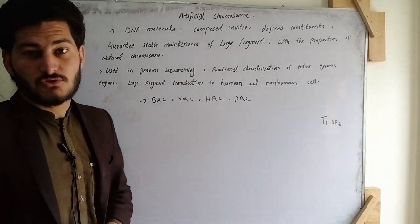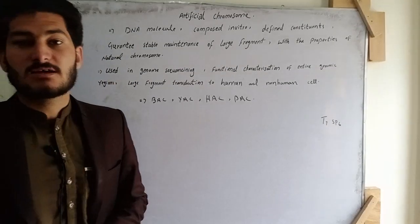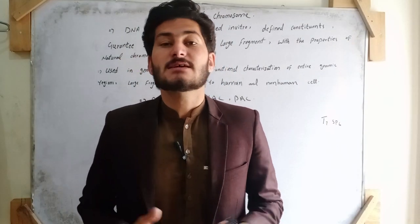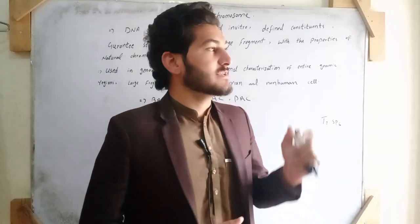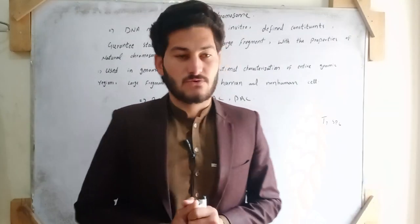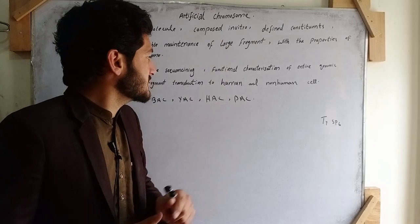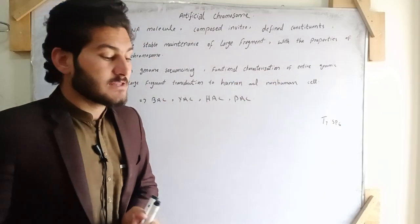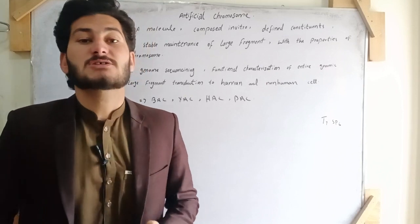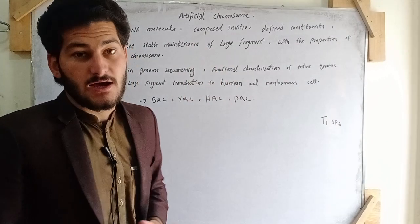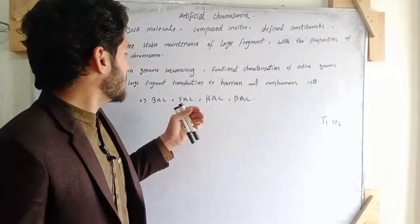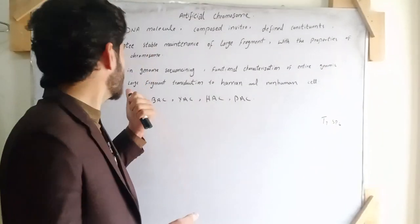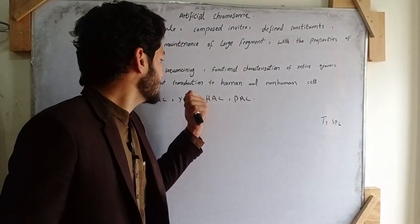Artificial chromosomes are used in genome sequencing — we can sequence any type of genome using artificial chromosomes. The second function is the functional characterization of entire genomic regions; we can find out the function of any type of gene using artificial chromosomes.